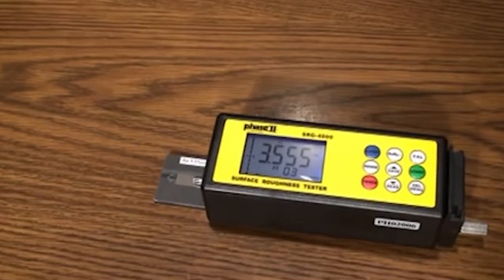The most popular parameter is RA, which is commonly defined as the arithmetic average roughness.